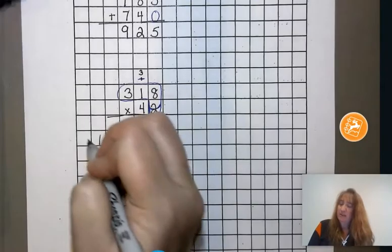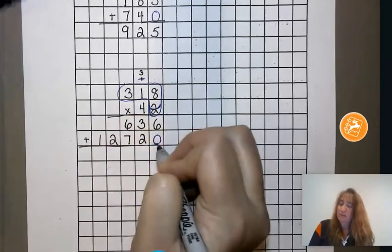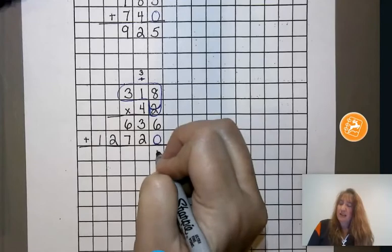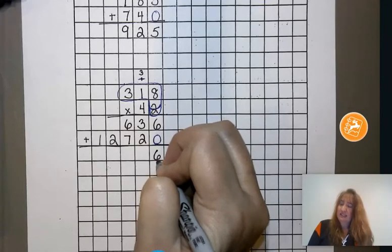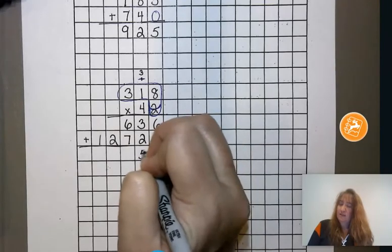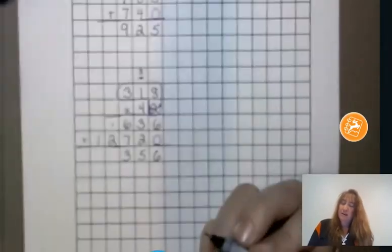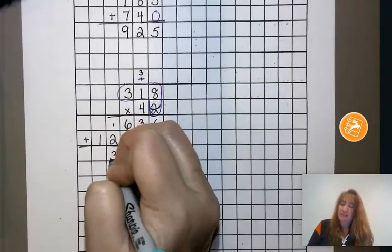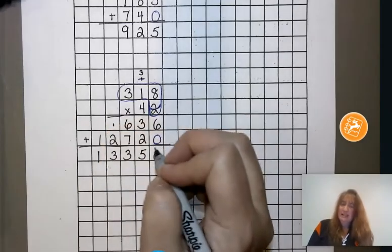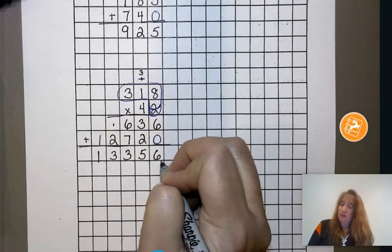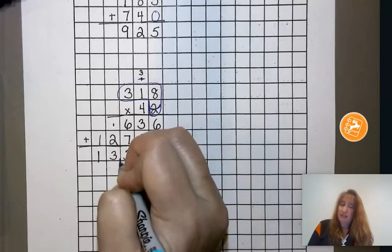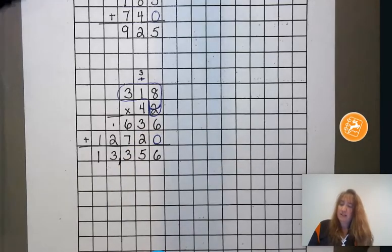So with this step, all I have left is to add up my numbers. And I have 6, 5, 13. Put down the 3, carry the 1. 2 plus 1 is 3, and 1. And we need a comma here, so we're going to go 3 places over and back: 1, 2, 3. And the final product of 318 times 42 would be 13,356.